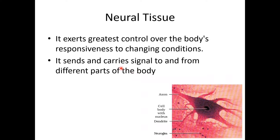One neural cell and the other cell have an interconnection, passing information throughout the body from one place to another. The basic diagram of a neuron includes: the cell body, nucleus, dendrite center, axon, myelin sheath, and nodes of Ranvier. This is the neural cell.